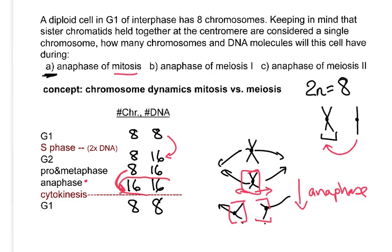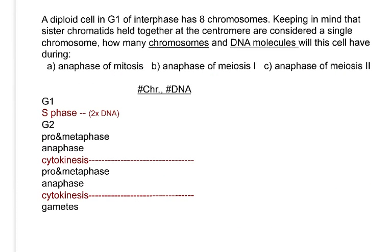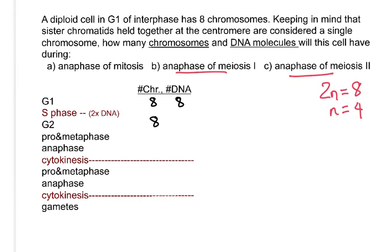The answer to part A is 16 chromosomes and 16 DNA molecules. Now let's move on to meiosis. The same starting cell — a diploid cell in G1 with eight chromosomes, 2n equals 8 — means the haploid number is 4, so gametes at the end should have four chromosomes. In G1, chromosomes equal DNA molecules. Passing through S phase, chromosome number stays the same but DNA molecules double.